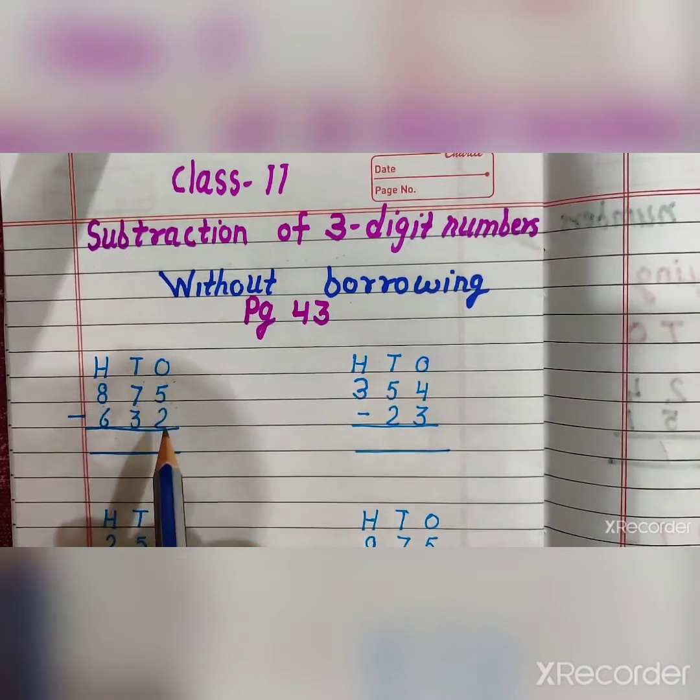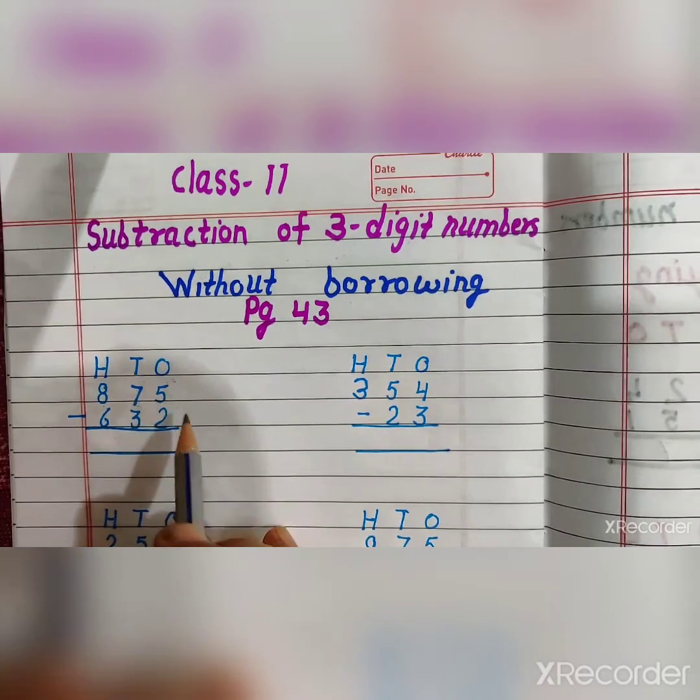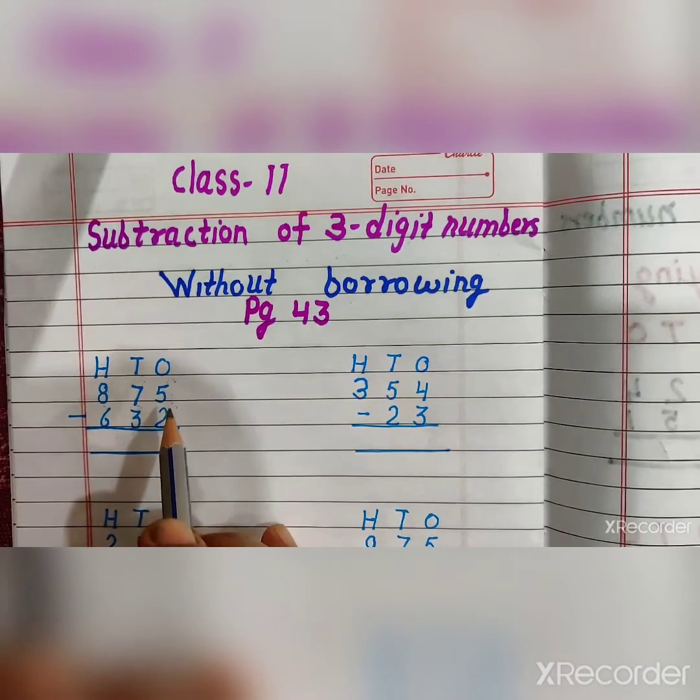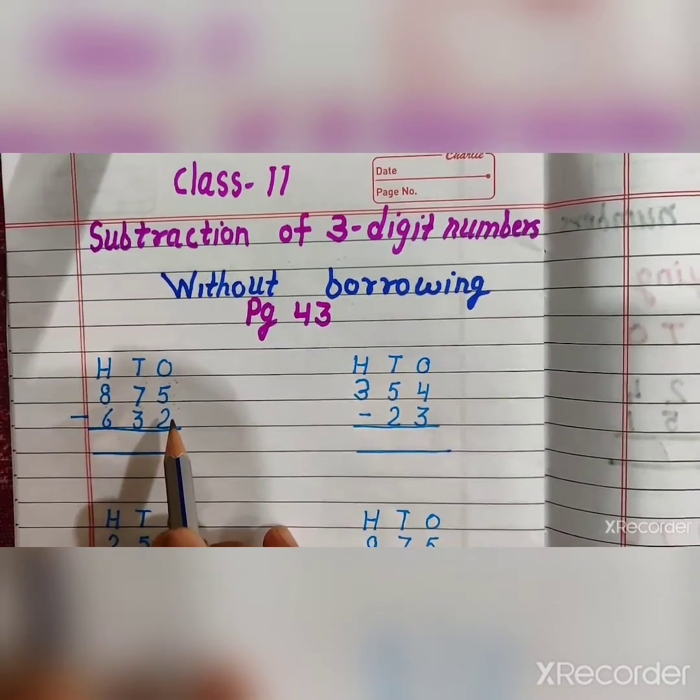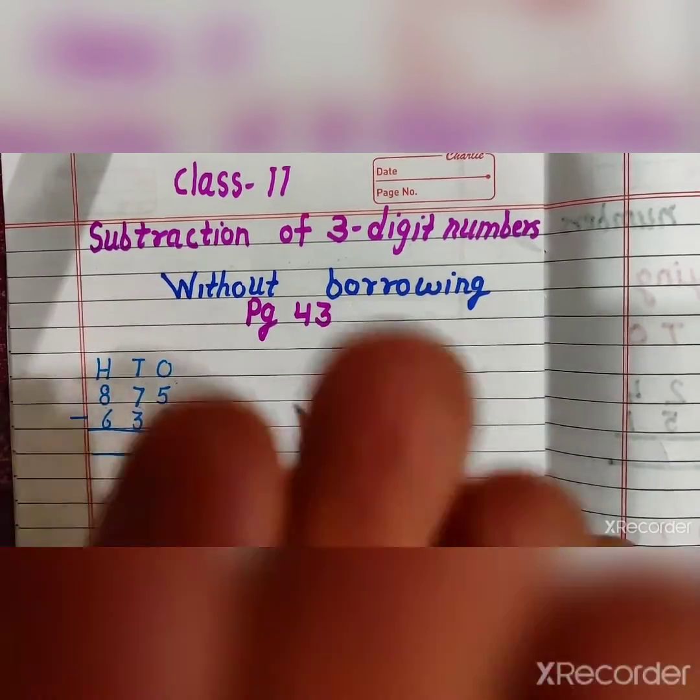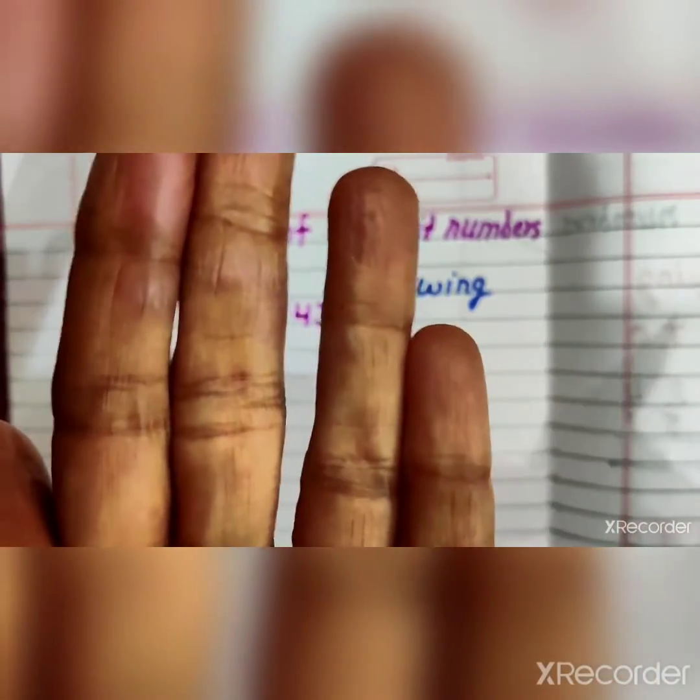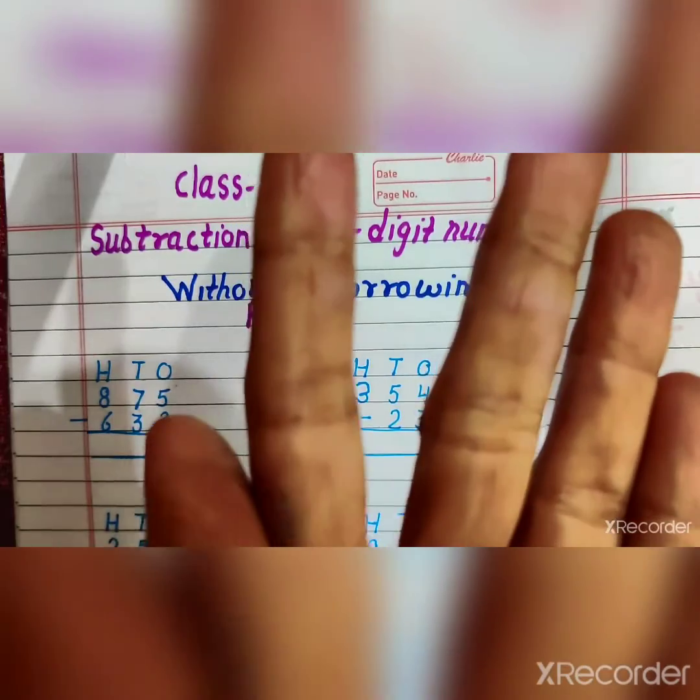We will start with one's place. First, 5 minus 2. We will count on fingers. Let's see. We will take 5 fingers. How many fingers? 5 fingers.